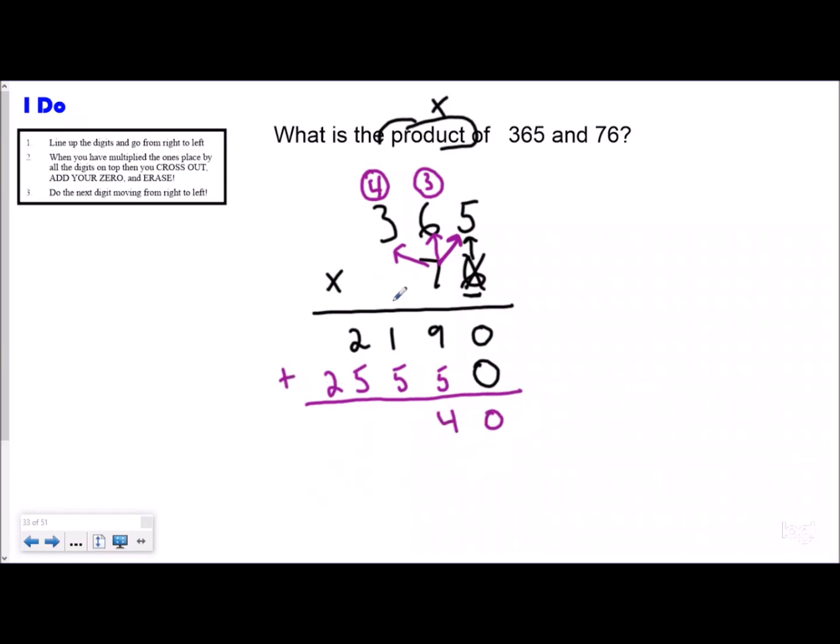Then I'm going to add up my products. Zero plus zero is zero, nine plus five is 14, carry one and circle it. That's going to be seven, seven and two, so my product is 27,740.